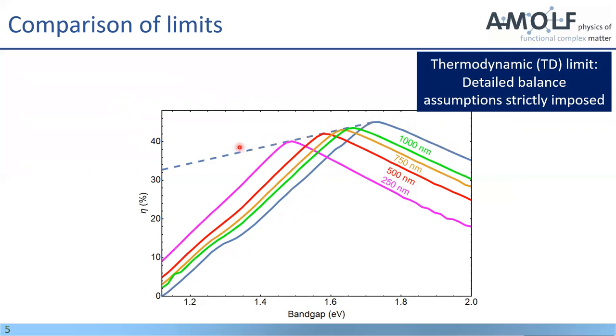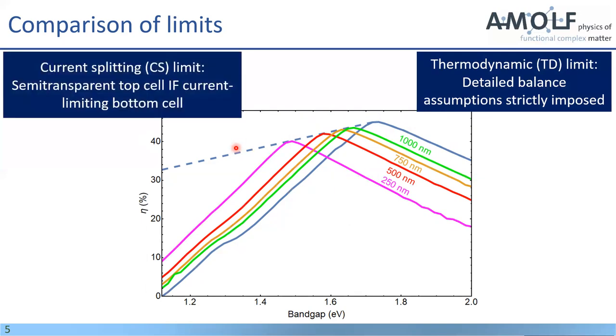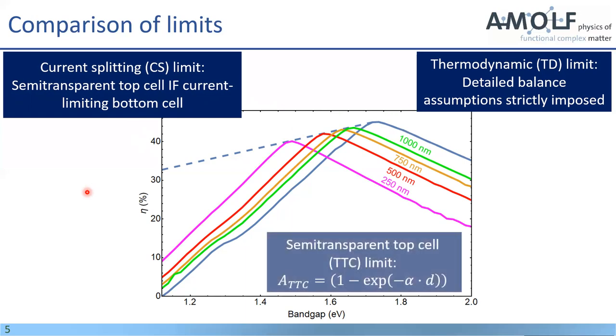However, if you go lower in band gap, you see that there's actually a different limit that gives you higher values. That's the current splitting limit. And this one basically relaxes the detail balance conditions a little bit in the sense that it allows for non-perfect absorption in the top cell to achieve current matching by letting light pass through into the limiting bottom cell. And that helps you if you go to lower top cell band gaps.